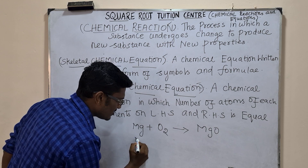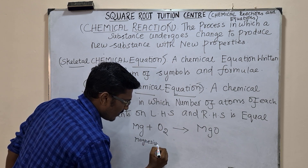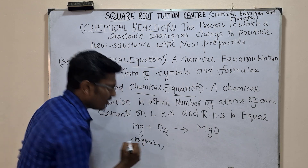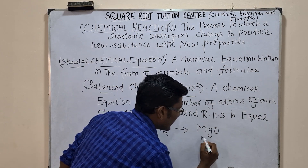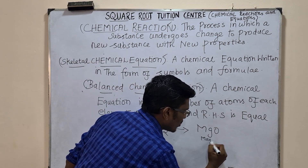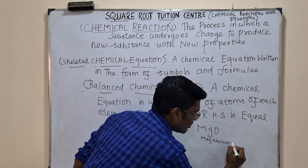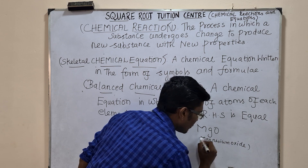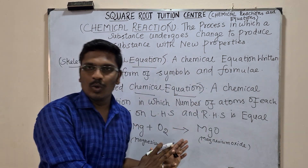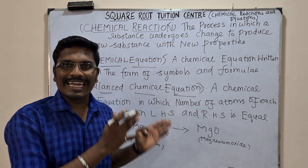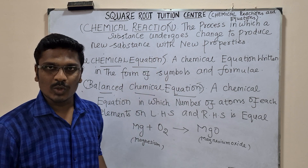Mg means magnesium, and MgO means magnesium oxide. So if I say this is a skeletal chemical equation — why? Because the atoms are not balanced on both sides.